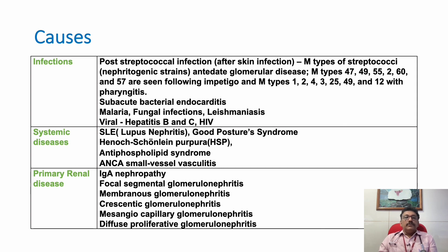Bacterial endocarditis can also sometimes lead to glomerulonephritis. Other infections like malaria — which is very important — fungal infection, leishmaniasis, and many viral infections including hepatitis B, hepatitis C, and HIV can all also produce glomerulonephritis.